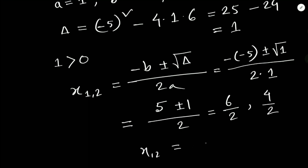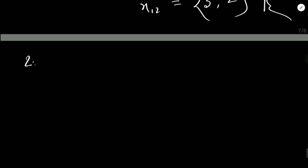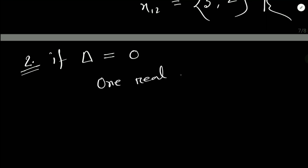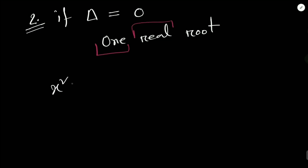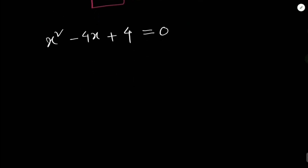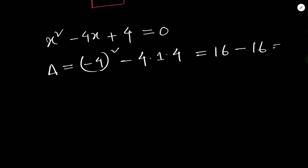The second characteristic: if Δ = 0, the quadratic equation has one real root. The root is a single value and it is a real number. Let's have an example: x² - 4x + 4 = 0. The discriminant is Δ = (-4)² - 4(1)(4) = 16 - 16 = 0.